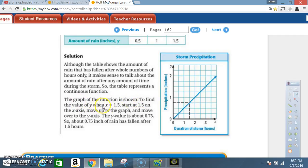To find the value of y when x is 1.5, start at 1.5 on the x-axis, move up to the graph, and move over to the y-axis. The y-value is about 0.75, so about 0.75 inch of rain has fallen after 1.5 hours.